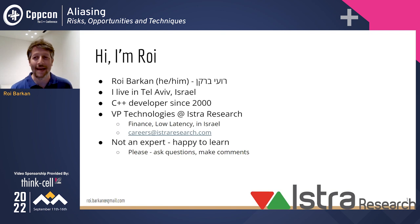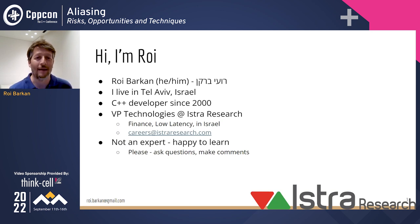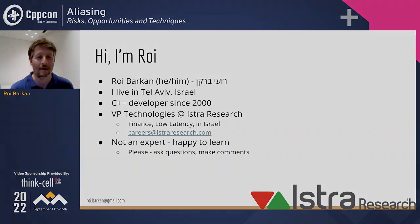My name is Roy Barkan. I live in Tel Aviv, Israel — it's almost midnight here right now. I've been doing C++ for quite a long time, and for the last 10 years or so I've been working with Istra Research. We're a high-frequency trading company based in Israel. We do exciting things, and we're always looking for great C++ people to join us.